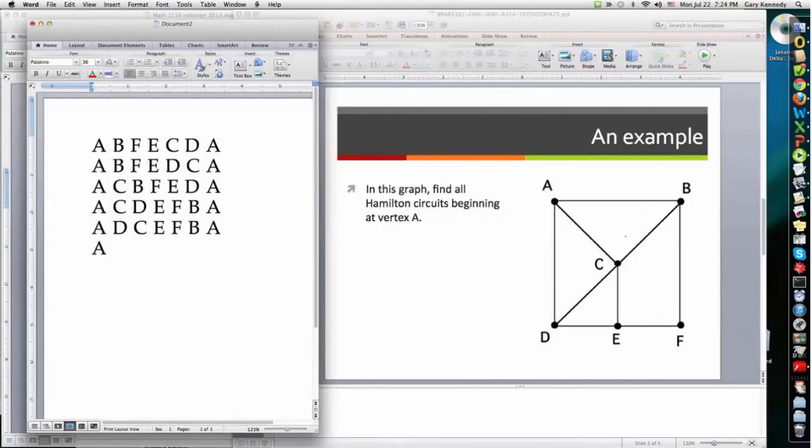And now what haven't we tried? Well, after A, D, we haven't tried going to E. But we know after that we would have to do F, and then B, and then C, and then finally back to A. And now we've systematically exhausted all the possibilities, and here we are. We have six possible Hamilton circuits, as I said.